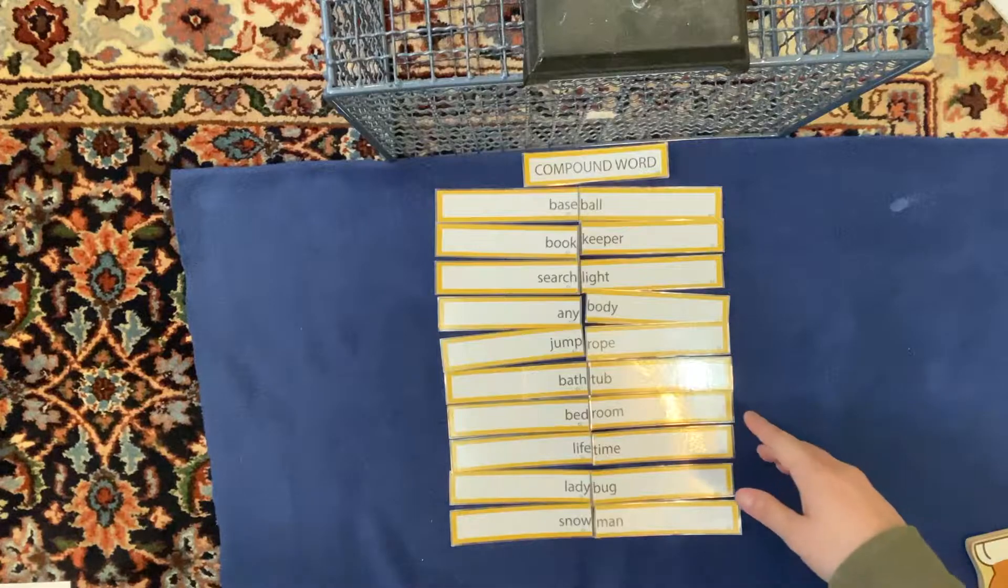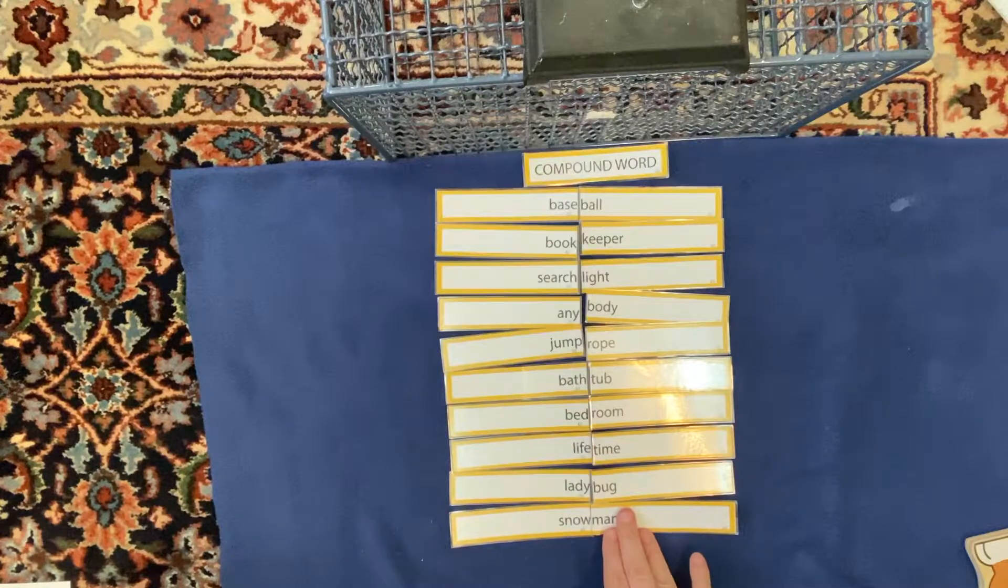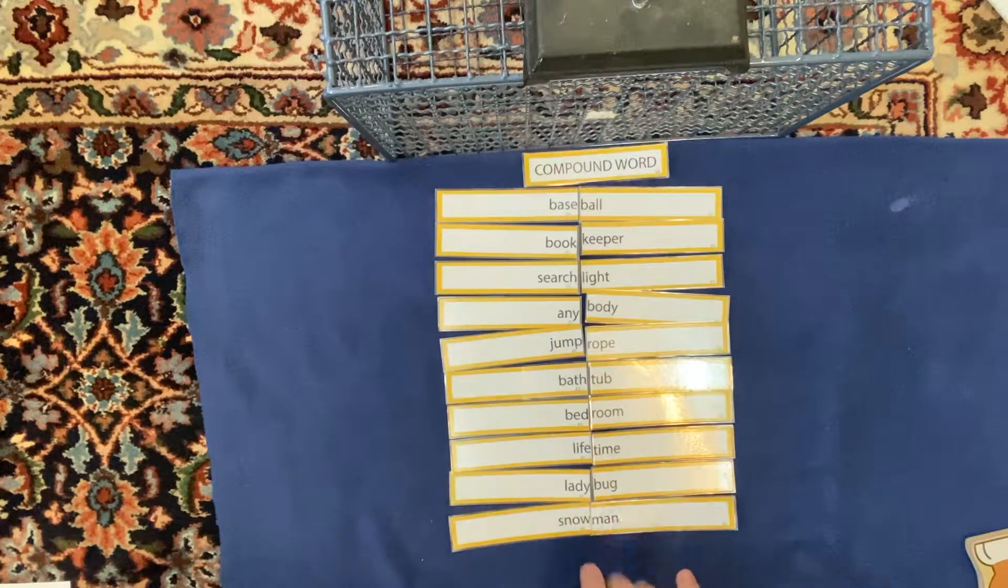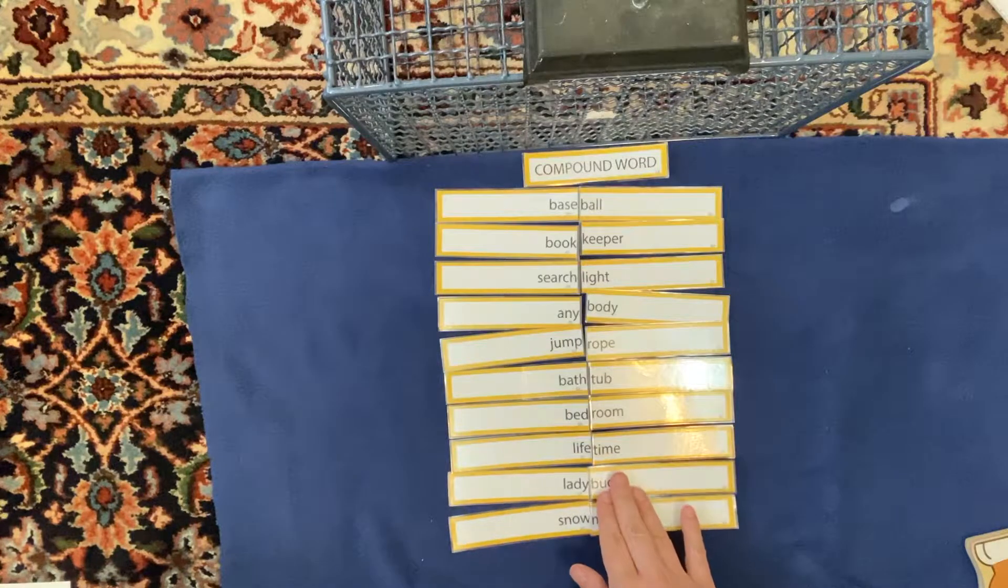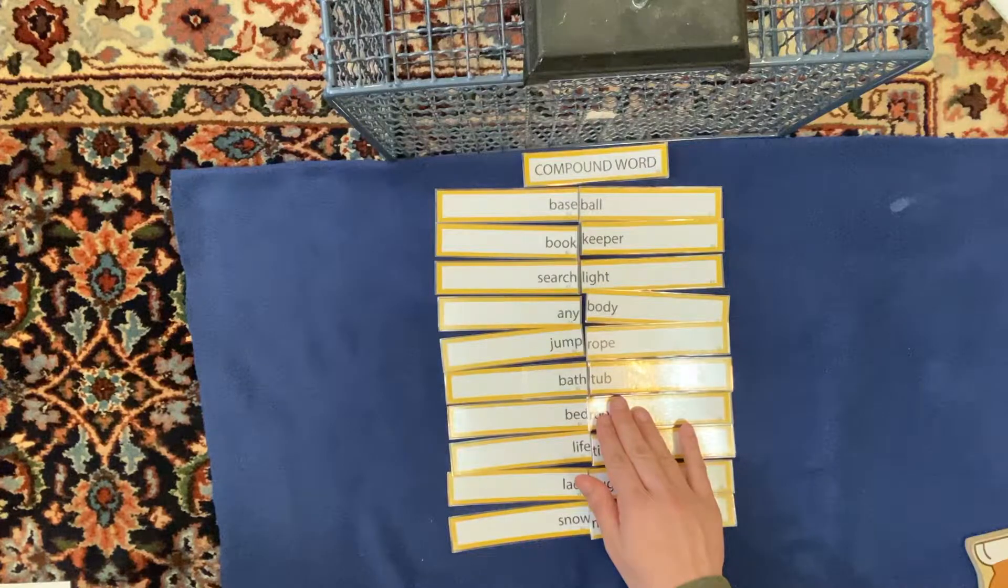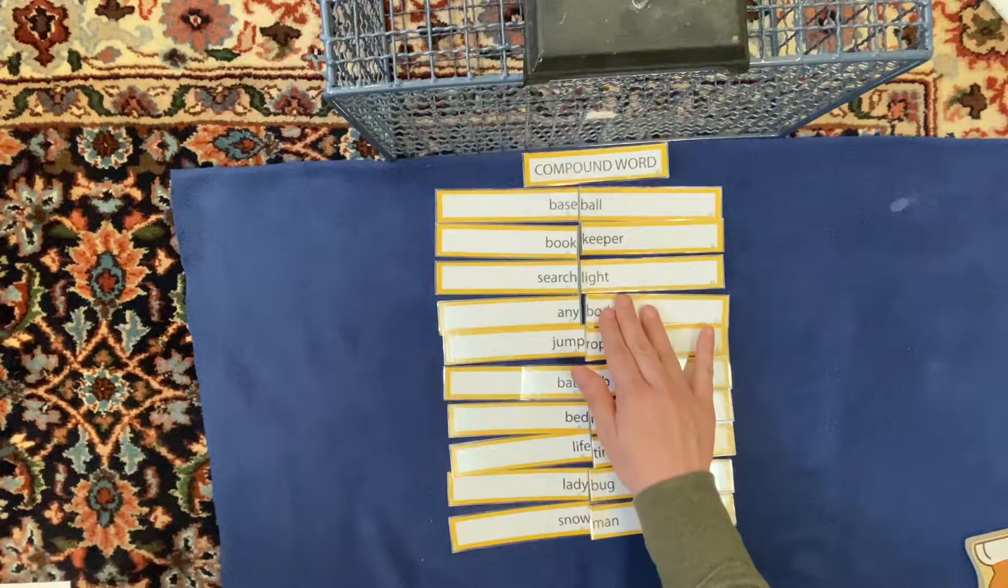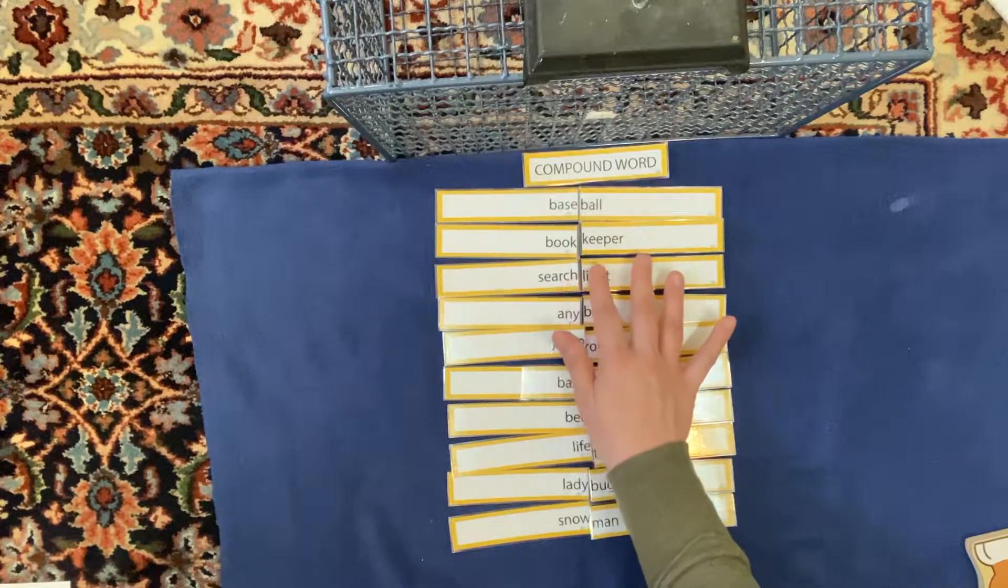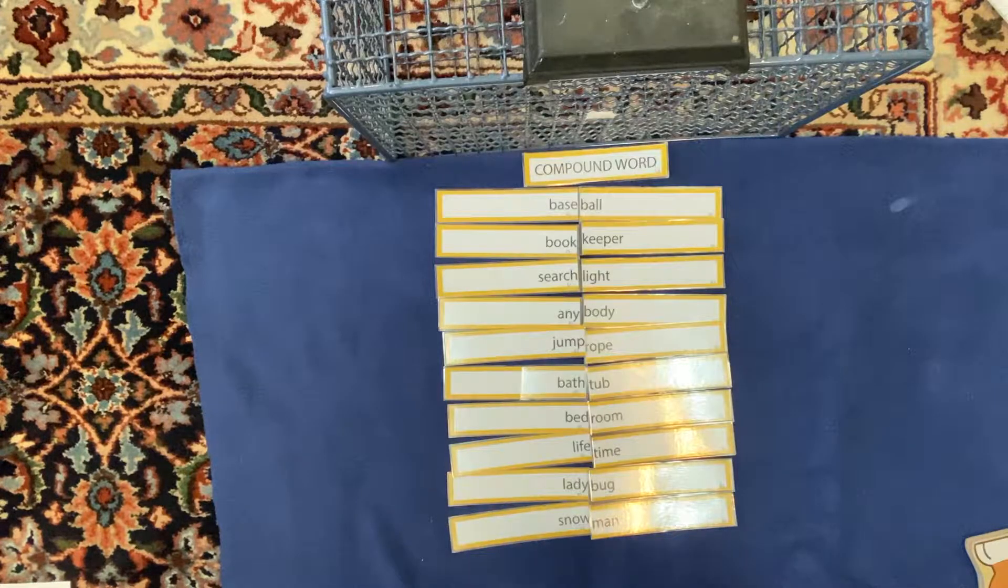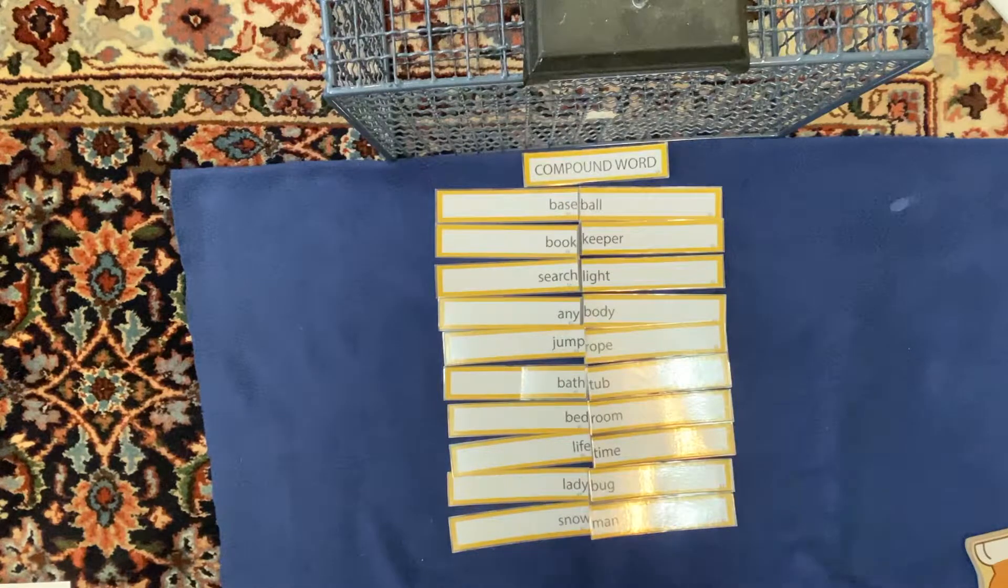Okay. So, these words are compound words. And what that means is that snowman is actually one word. We hear two little words in it. But when we write it, it's just one word. Same with ladybug, lifetime, bedroom, bathtub, jump rope, anybody, searchlight, bookkeeper, and baseball. Okay. And there's tons and tons of compound words.